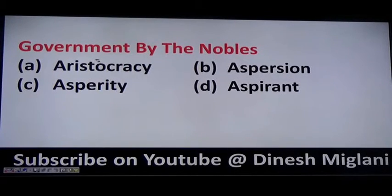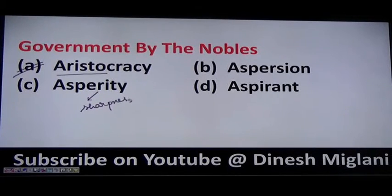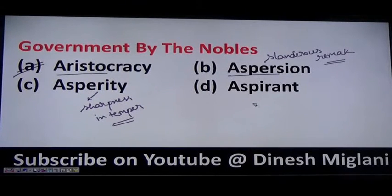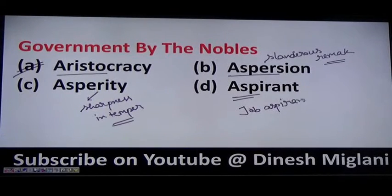Government by the nobles is said to be aristocracy. Next word is asperity, which means sharpness in temper — some persons are very sharp in temper, and that sharpness is called asperity. Aspersion means a slanderous remark, or a bad remark towards someone. Aspirant means a seeker after position or status — for example, we call them job aspirants, meaning those who aspire for jobs. Government by the nobles is said to be aristocracy.